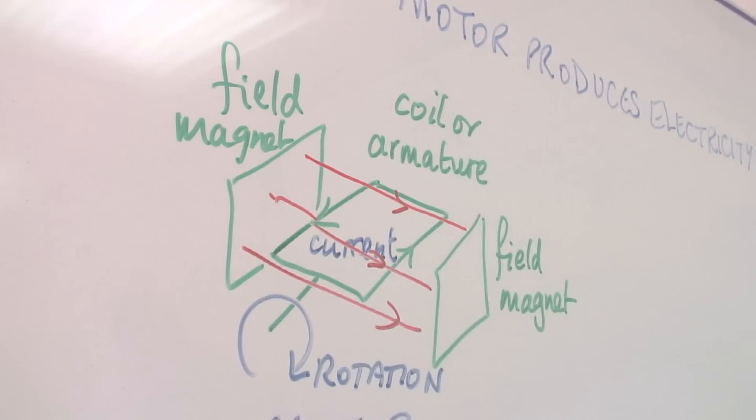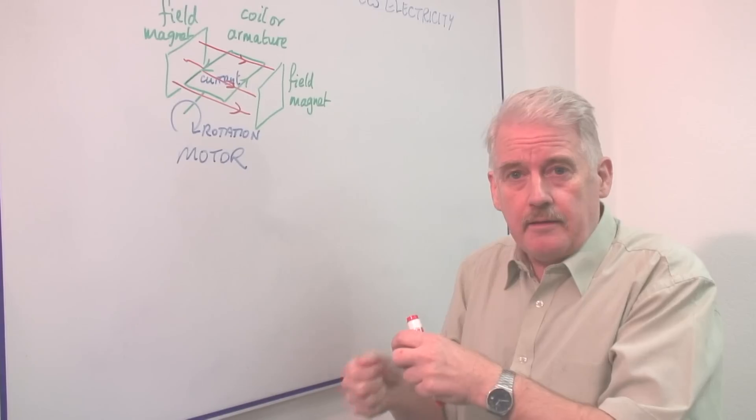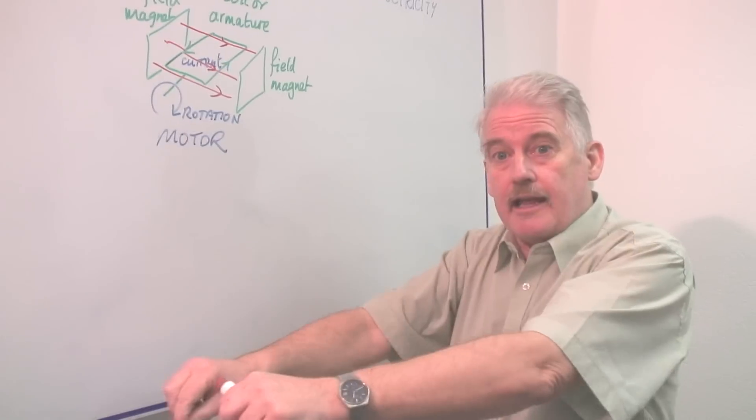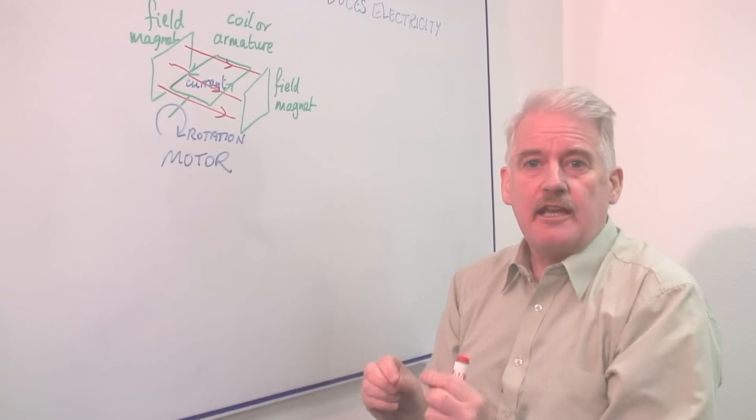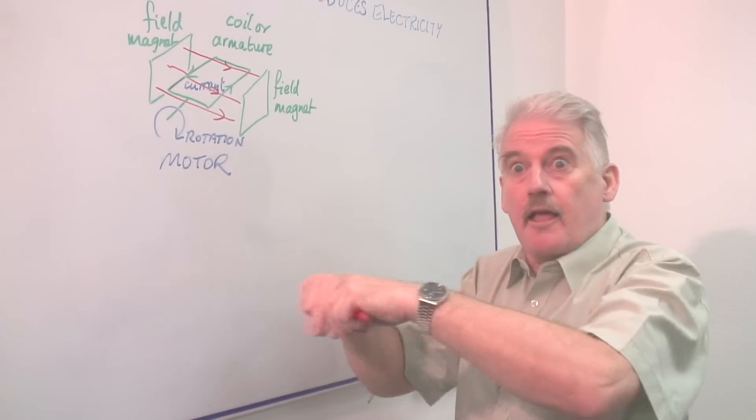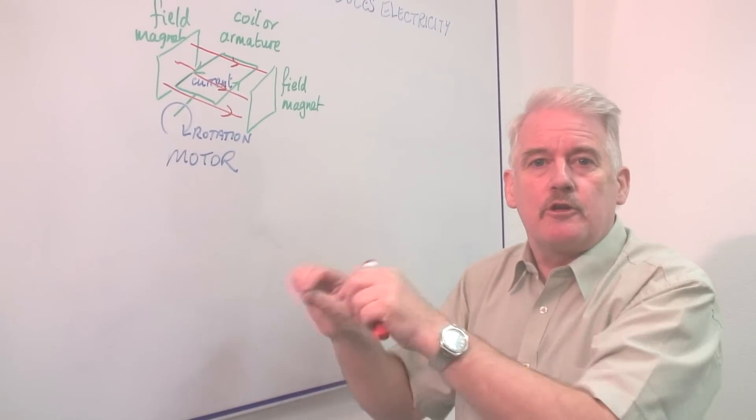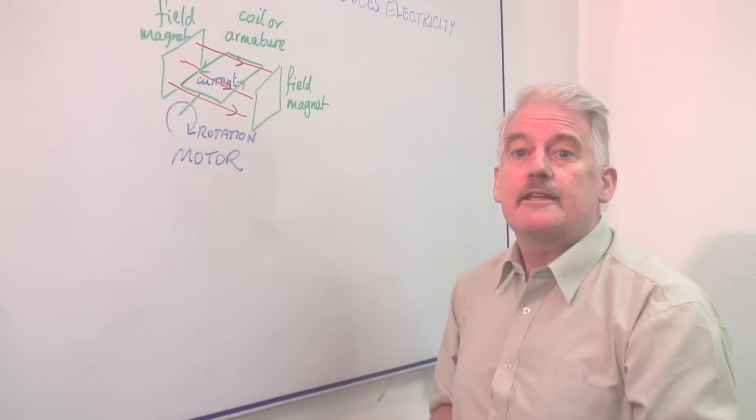So, all I do is I take the motor, I physically turn it by hand, and where the electric wires were bringing the current in when it was a motor, the electric wires can be used to take the current out when it's a generator.